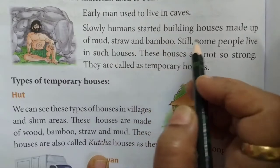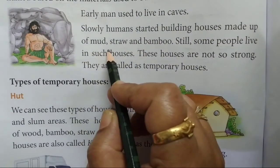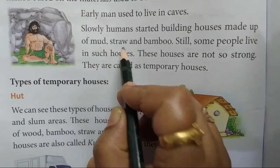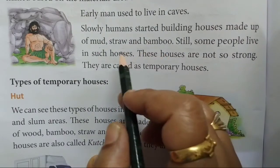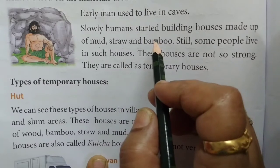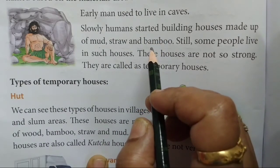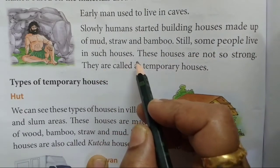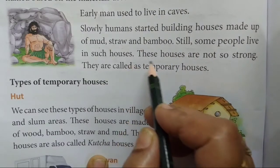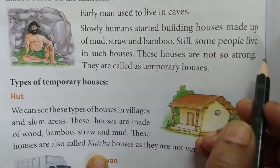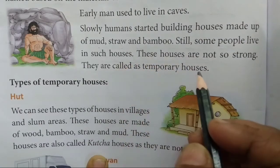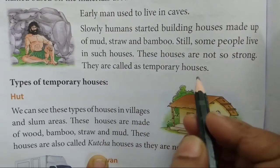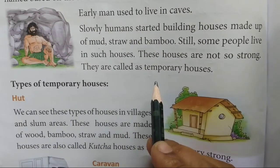Slowly humans started building houses made up of mud, straw and bamboo. Mud means मिट्टी, straw means तिनका, and bamboo means बांस। धीरे-धीरे मानव ने मिट्टी, तिनके और बांस के घर बनाने शुरू किये। Still some people live in such houses. These houses are not so strong — ऐसे घर मजबूत नहीं होते थे। They are called temporary houses — ऐसे घरों को अस्थाई घर कहा जाता है।